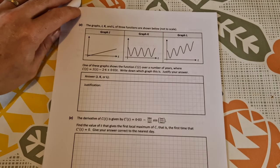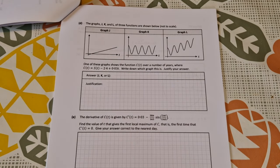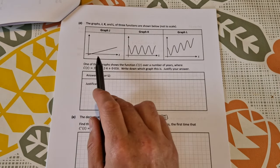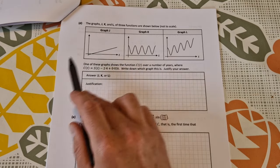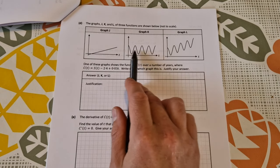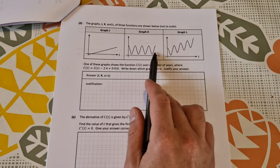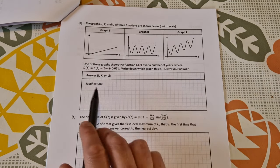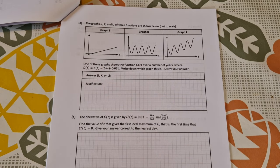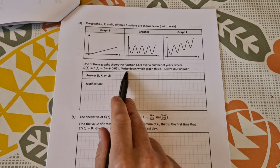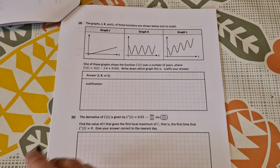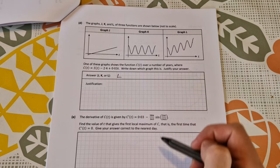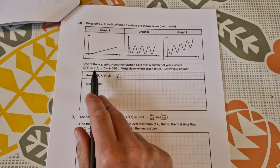On to part d. The graphs j, k, and l are shown below. They're not to scale. Here's j, a linear function, k is some sort of trigonometric function, and l looks like some sort of trigonometric function that is increasing. One of these graphs shows the function c(t) over a number of years, where c(t) equals that. Write down which graph it is and justify your answer. The answer is l, it's this one.